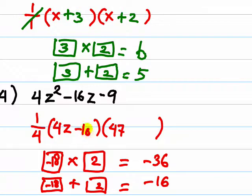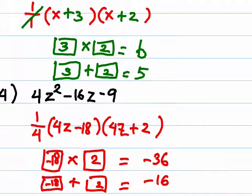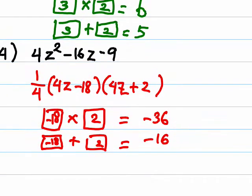So we put here negative 18 and plus 2. So this should be 4z. Now if we look at this, usually we can factor out 4.